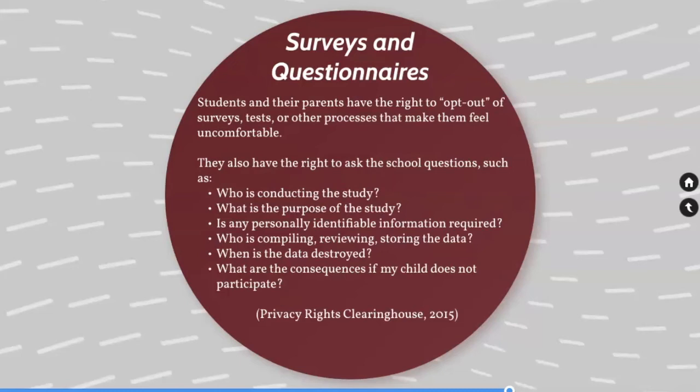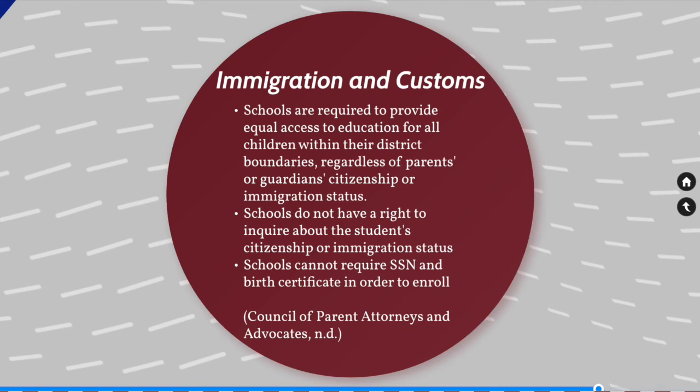Let's take a look at how immigrants are protected under FERPA. According to COPAA, which is the Council of Parent Attorneys and Advocates, schools are required to provide equal access to education for all children within their district boundaries, regardless of parents' or guardians' citizenship or immigration status. Schools do not have a right to inquire about the student's citizenship or immigration status, which means that they cannot technically require social security numbers and birth certificates in order for a family to enroll.